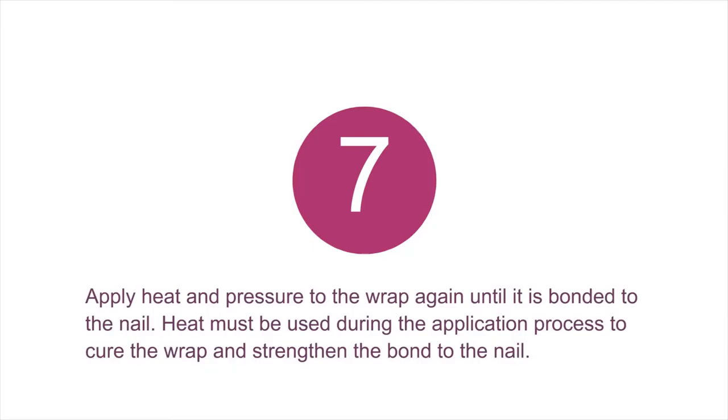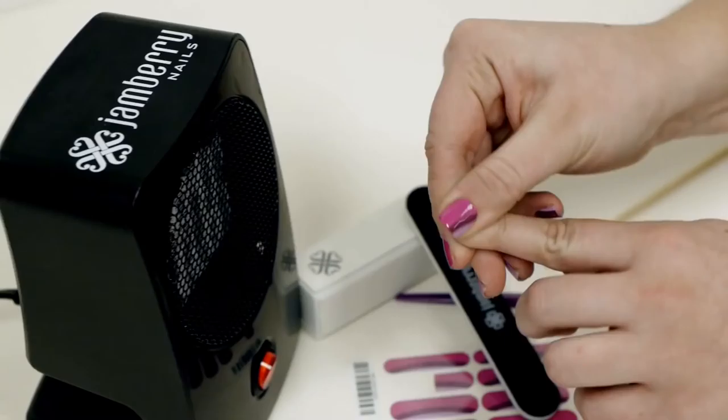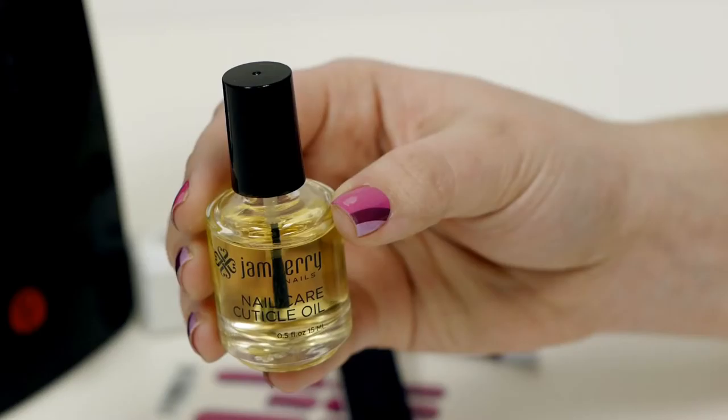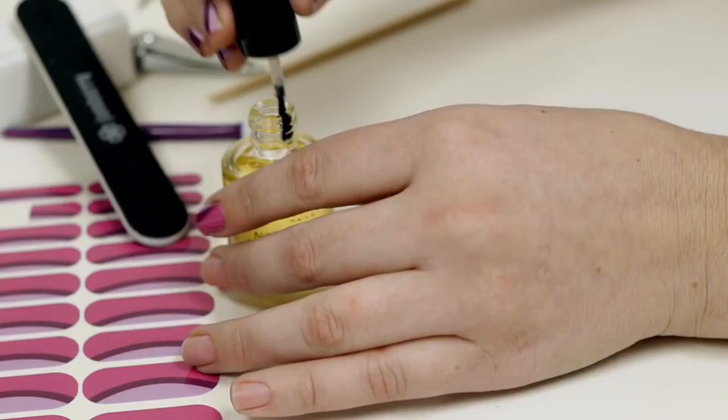Apply heat and pressure again to ensure a strong seal to the nail. To keep your nails healthy and moisturized while wearing your nail wraps, apply our cuticle oil around the edges of your nails. Make sure the wraps are tightly sealed before applying the cuticle oil.